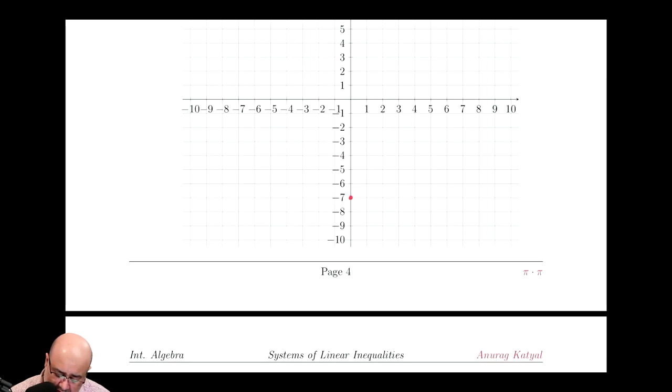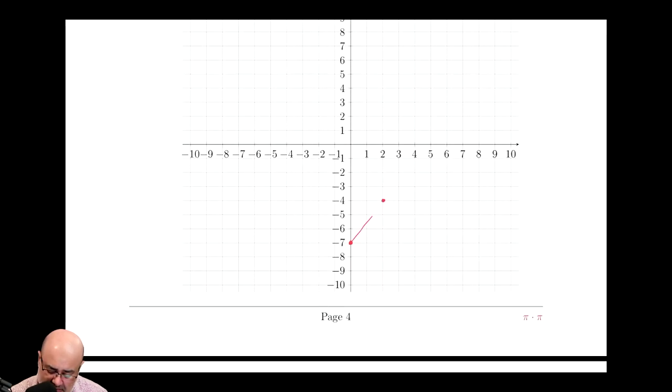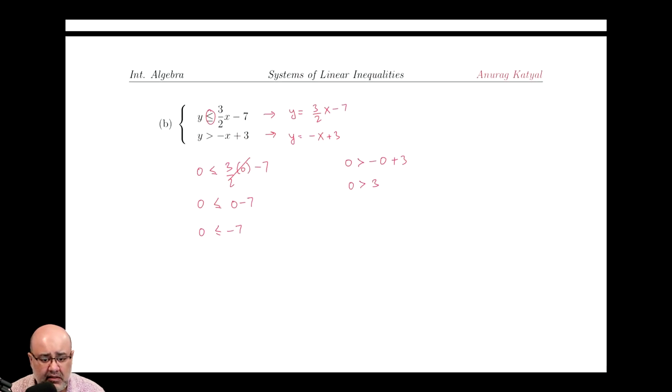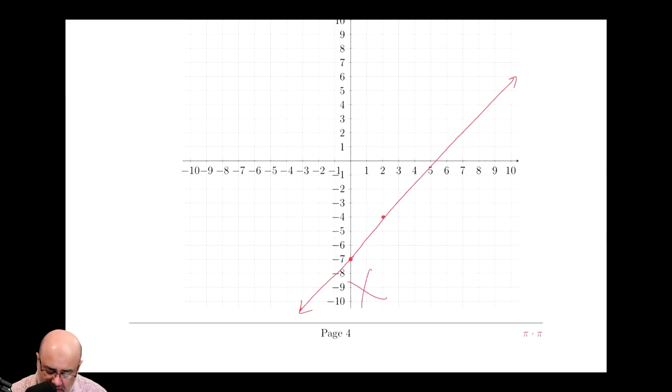So I start at negative 7, and then my slope is 3 halves. So I go up 3, 1, 2, 3, and then to the right 2, so that's my second dot. And because this is less than or equal to, I have to make it a solid line. Arrowheads to indicate that the line goes in that direction forever, or in those directions forever. We can plug in the origin again, which is done right here. So we get 3 halves times 0, that just goes away to 0. 0 minus 7 is negative 7, and we get 0 is less than negative 7. That is a false statement. I'd rather have $0 than owe someone 7. So that means I have to shade on the other side of the origin. So that means this is where all the crosses live.